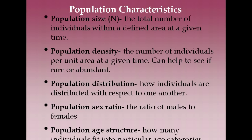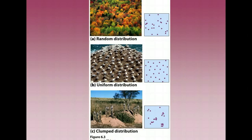Population distribution is how individuals are distributed with respect to one another. There are three types. Random distribution, like in A, has trees with no order — they're just randomly distributed. In B, uniform distribution could be plants in a plantation or territorial birds that maintain distance from one another. A lot of times you'll see organisms in clumps, like schools of fish, herding animals, or birds that flock, because living in large groups enhances feeding opportunities or gives protection from predators.